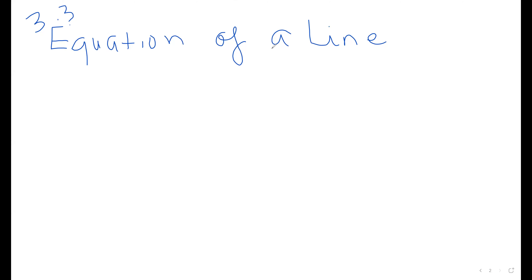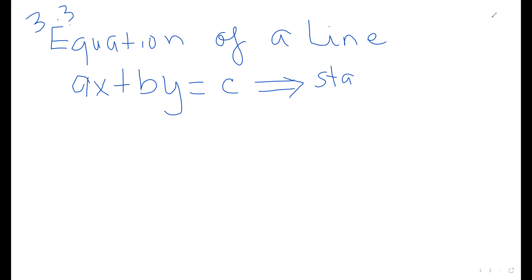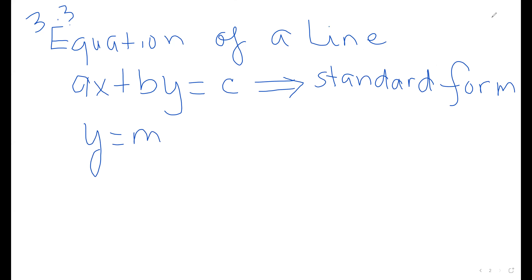In section 3.3, we're also going to talk about the equation of a line. We already know that the standard form is Ax + By = C. We'll also be talking about the slope-intercept form, y = mx + b, which we'll be working with mostly in this section. Both are equations of a line.